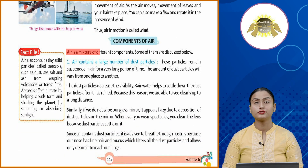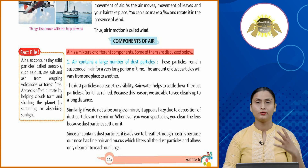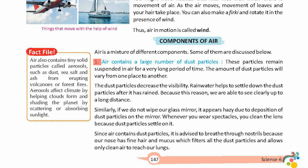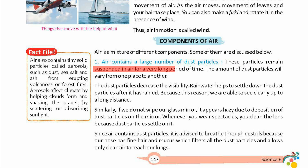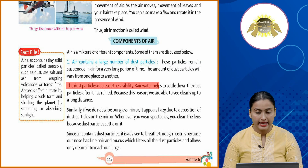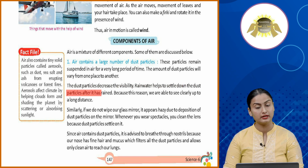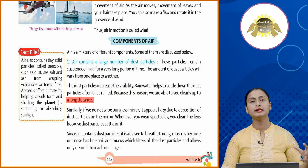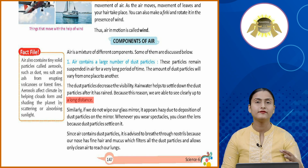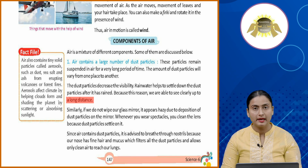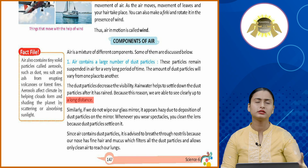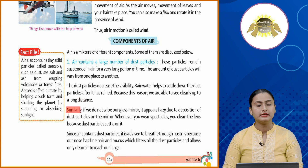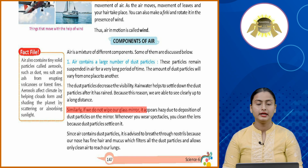Air is a mixture of different components. Number one: air contains a large number of dust particles which remain suspended in air for a very long time. The amount of dust particles varies from place to place. Dust particles decrease visibility. Rainwater helps settle down the dust particles, which is why we can see clearly to a long distance after rain.